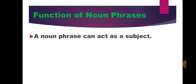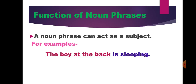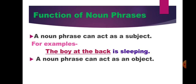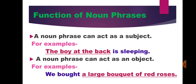Function of noun phrases — how it works in a sentence. A noun phrase can act as a subject. For example: 'The boy at the back is sleeping.' The group of words 'the boy at the back' is a noun phrase used as the subject. A noun phrase can also act as an object. Example: 'We bought a large bucket of red roses.' The group of words 'a large bucket of red roses' is a noun phrase acting as the object.